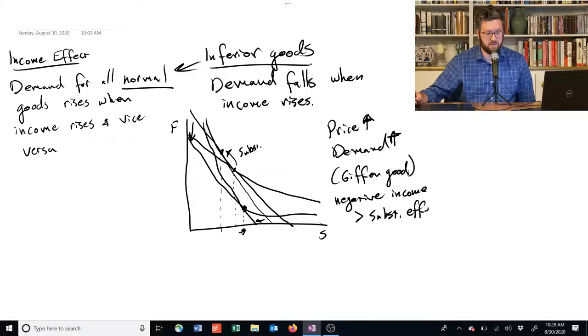And so that's why these are not that common, because you need a good that has a really weak substitution effect but a really large negative income effect as an inferior good.